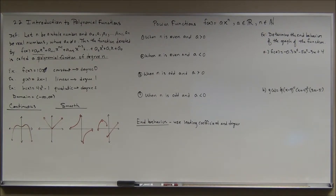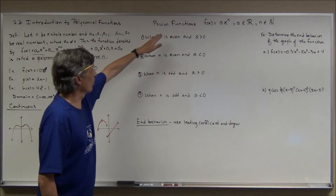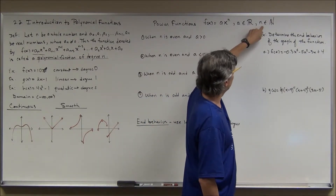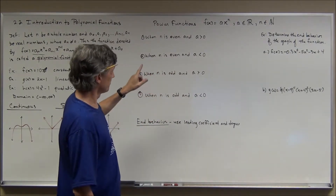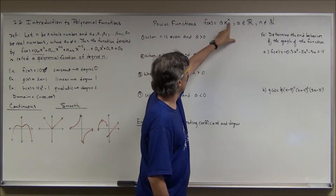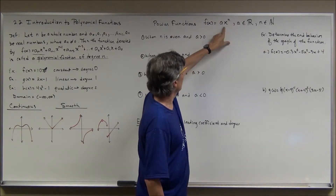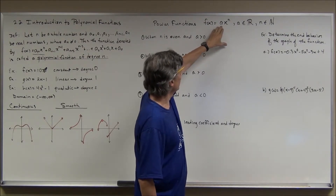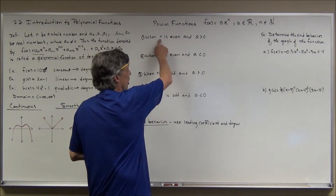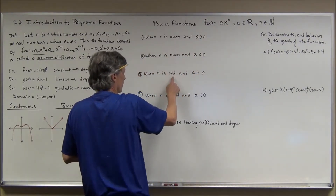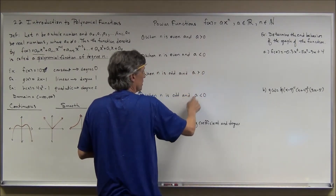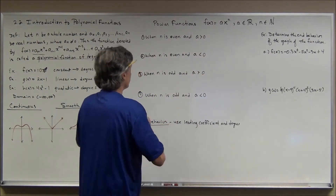The most basic types of polynomial functions are called power functions. Power functions fit the form f(x) = ax to the n, where a is a real number and n is a natural number. An important question is: what happens when the degree n is even versus odd, and when the leading coefficient a is positive versus negative?